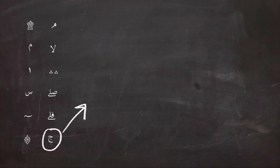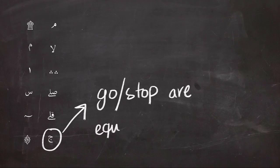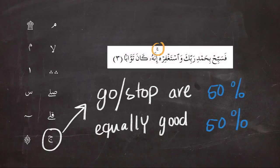Next is the sign of jim, and jim gives you 50/50 percentage of going or stopping. They are equally the same. You could stop or you could just keep reading, and it would be equally good.